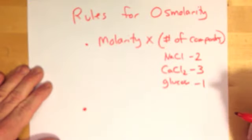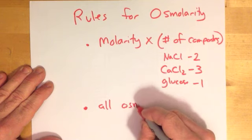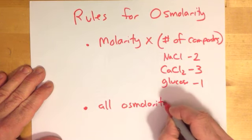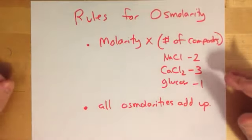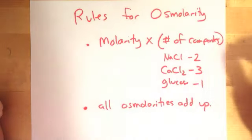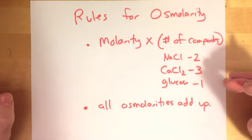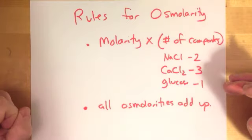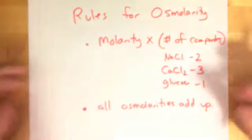Rule two is that all osmolarities add up. So once we determine the osmolarity for each particular component, they're all going to add up. So in our previous example, we added up the osmolarity that came from the chloride ion and the osmolarity that came from the glucose molecule, those all added up to combine to determine the osmolarity for the cell and the osmolarity for the outside space. So we add everything up.